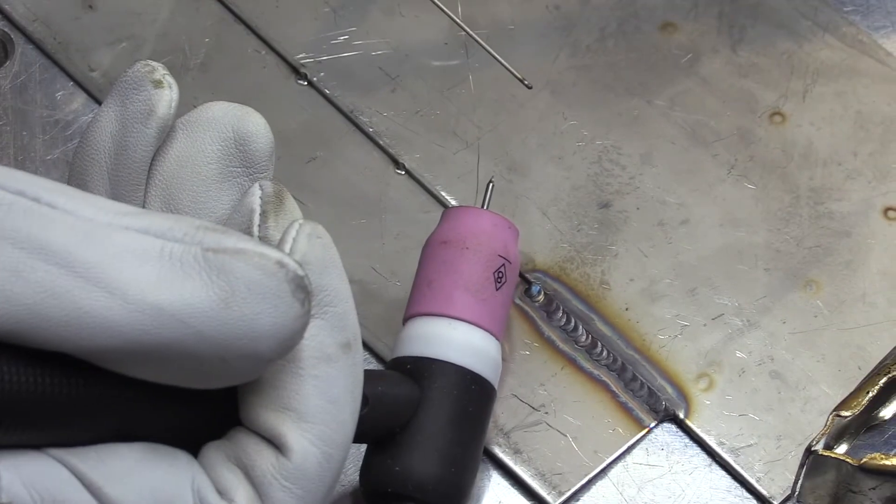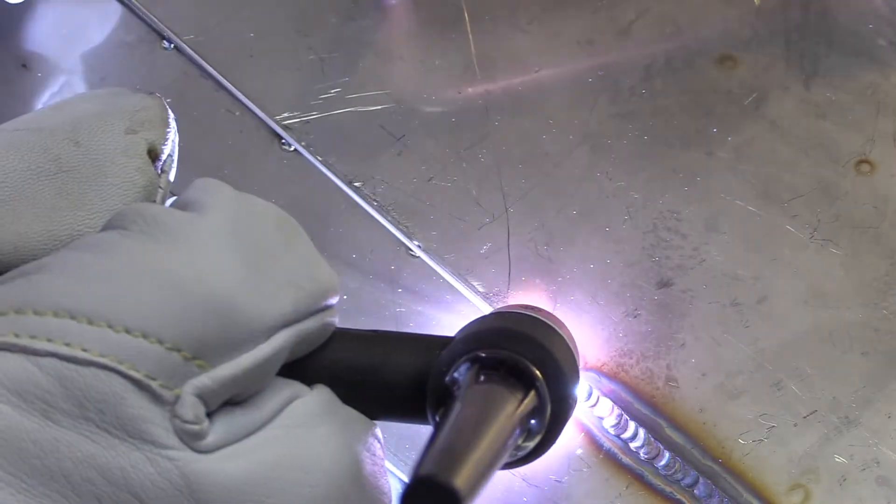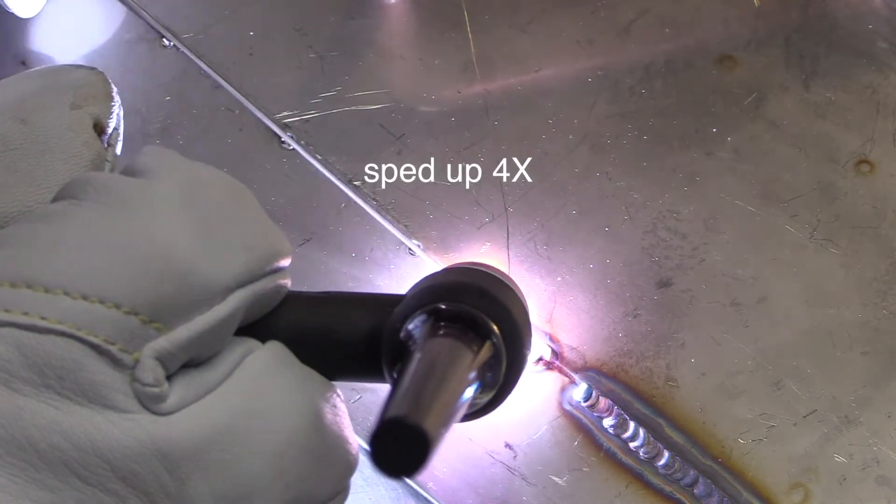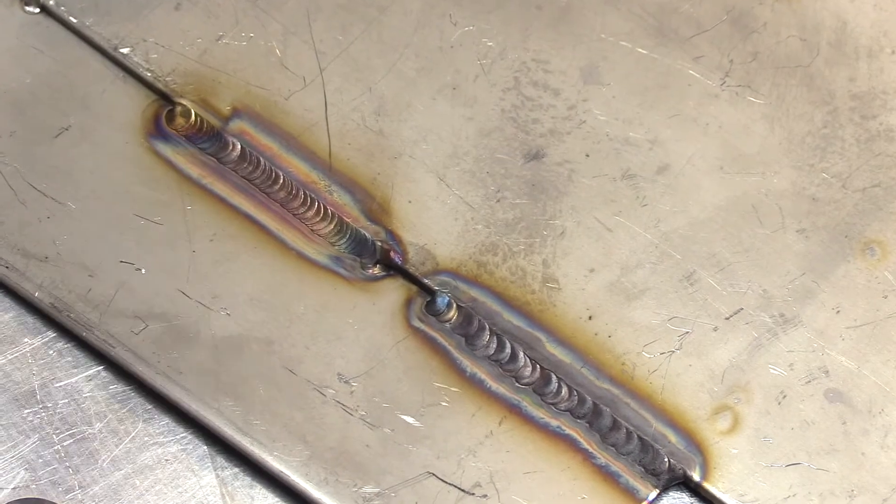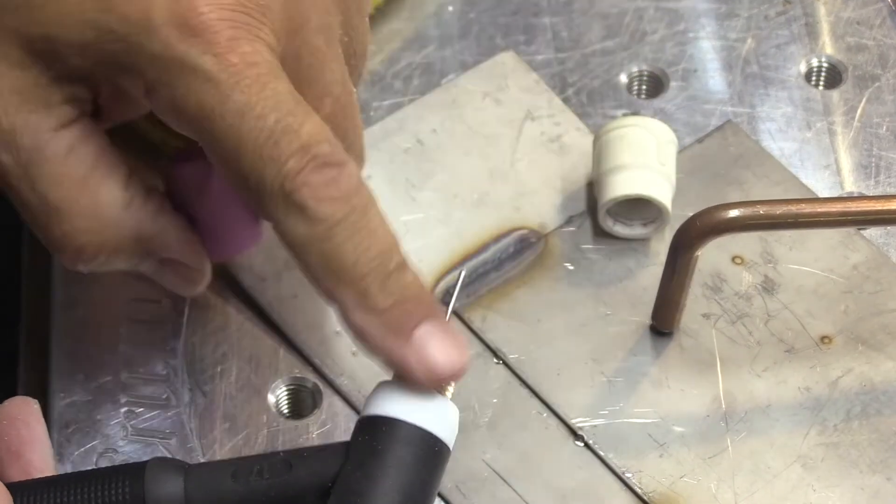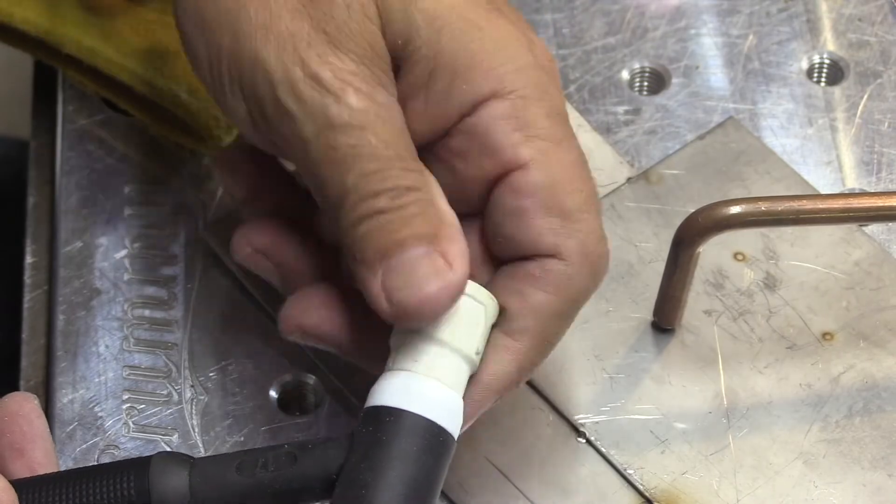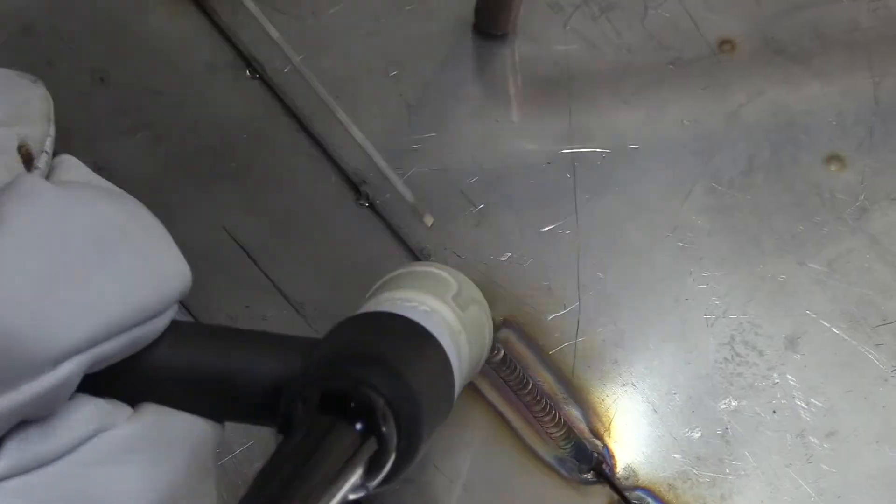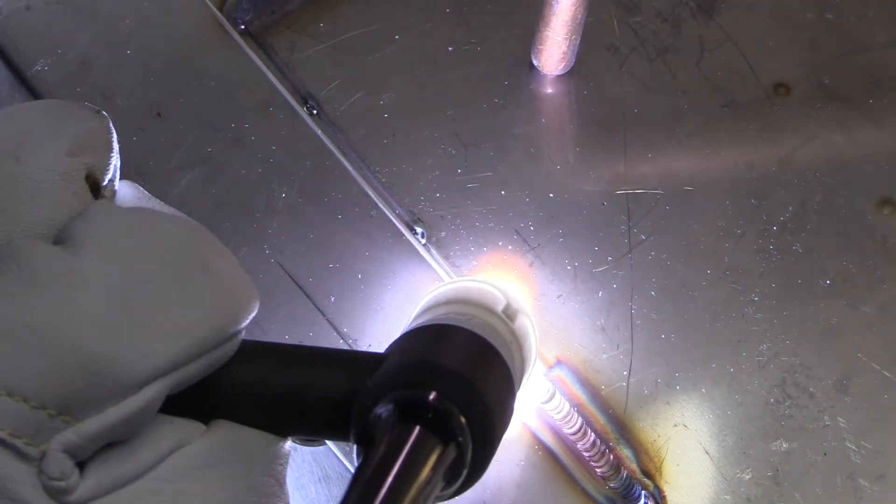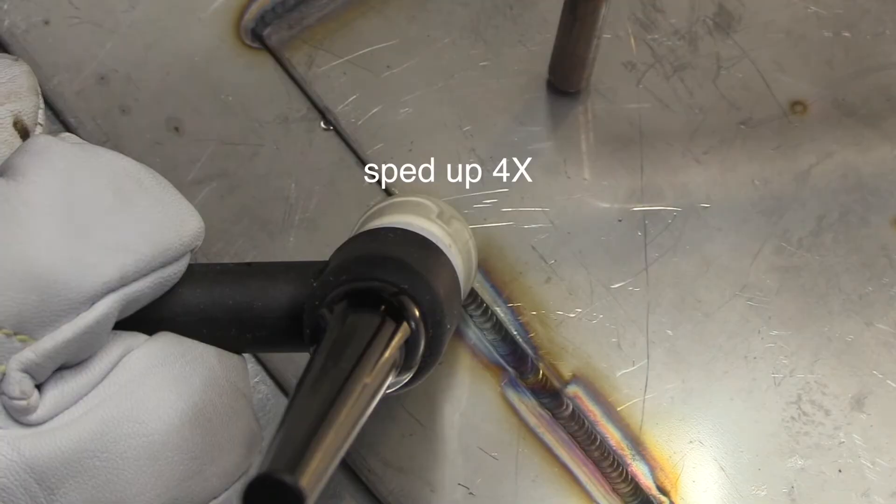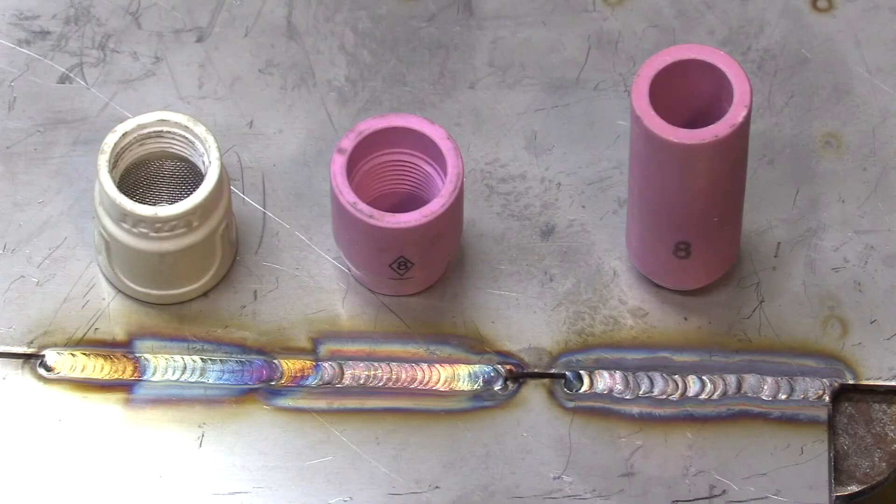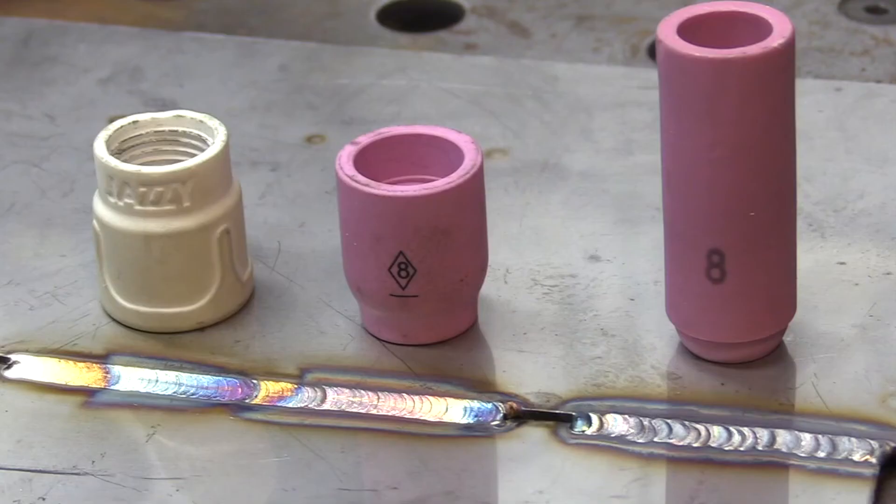It's gray the puddle swam around on me got oxidized same stick out went to a stubby gas lens number eight cup same gas way way better. You can also stick a Jazzy 10 ceramic onto a stubby gas lens same gas flow same stick out and get even better results and that's why I almost always use a stubby gas lens setup with either an 8 cup or something larger like a furic ceramic cup instead of the standard ones.